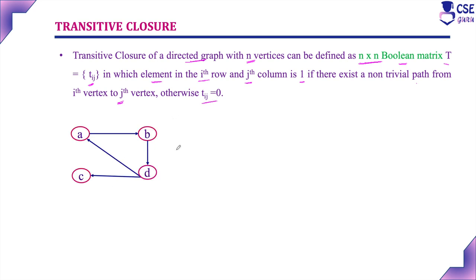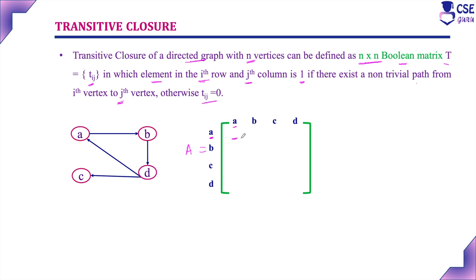Consider this graph and its adjacency matrix A. Each position is represented as 1 if there exists a non-trivial path from the i-th vertex to the j-th vertex, otherwise 0. From vertex A: A to B, there is a direct path, so we represent it as 1. There is no direct path to any other vertex, so the remaining positions in row A are represented as 0 — A to A, A to C, and A to D are all 0.